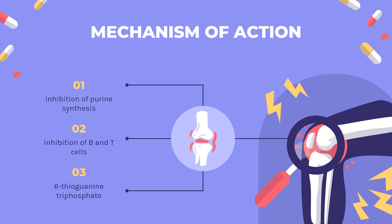6-thioguanine triphosphate, a metabolite of azathioprine, modulates activation of RAC1 when co-stimulated with CD28, inducing T cell apoptosis. This may be mediated through RAC1's action on mitogen-activated protein kinase, NF-kappa-B.